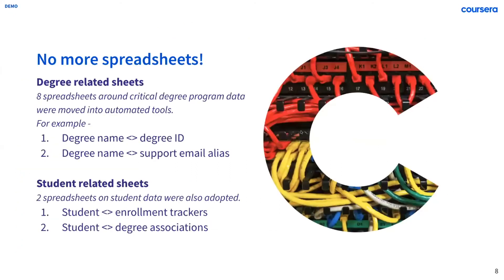What does this look like in the weeds? As we were starting to build our tools, we had these primary keys that we kept using over and over again — in particular, a degree name and a student name. We were able to identify about eight different spreadsheets with examples like degree name to degree ID, degree name to support alias, and again and again, where if we had a holistic application that allowed us to filter by degree name, we could have this kind of waterfall of information that appears.